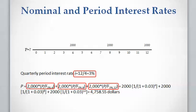Now we have to calculate the present value of these payments, but first we need to calculate the period interest rate, which is 12 divided by 4 equals 3%, because we have four quarters in a year. It is very important to note that we have to use the period interest rate because our time intervals are quarters.